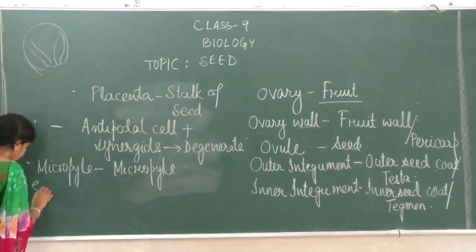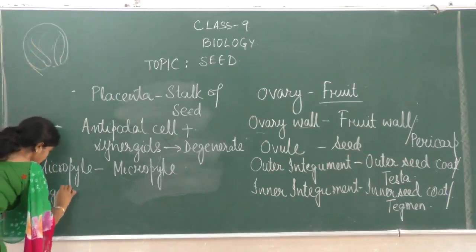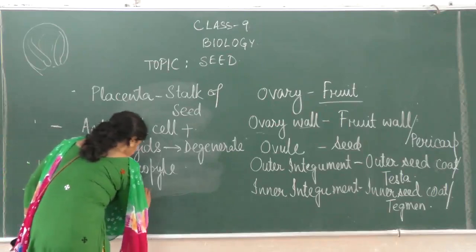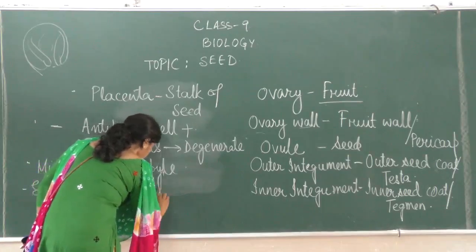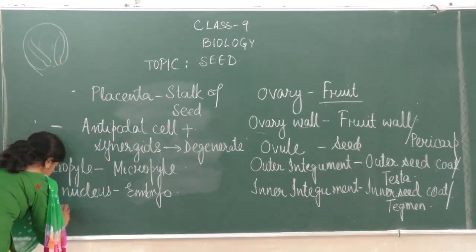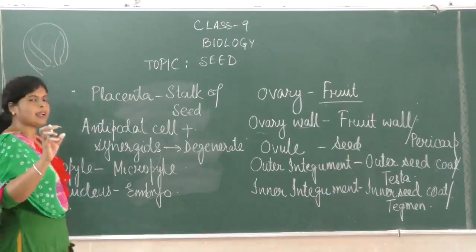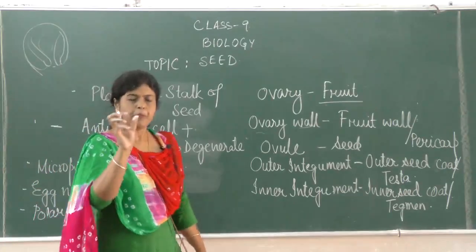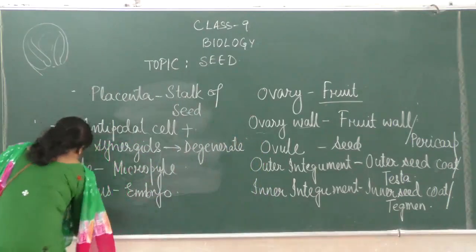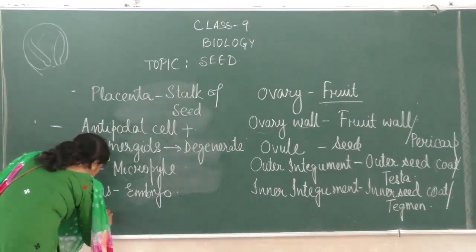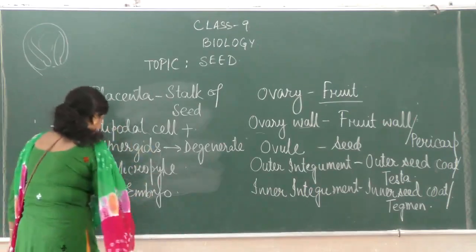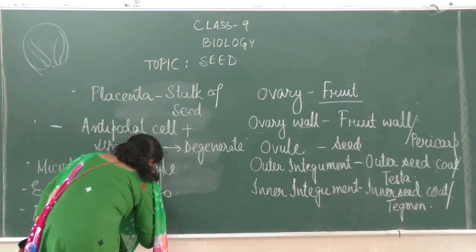Inside the ovary was the egg nucleus. After it gets fertilized it changes into the embryo — the baby plant. The two polar nuclei, before fertilization, form a secondary nucleus, and after fusion with the male gamete, they form the endosperm.